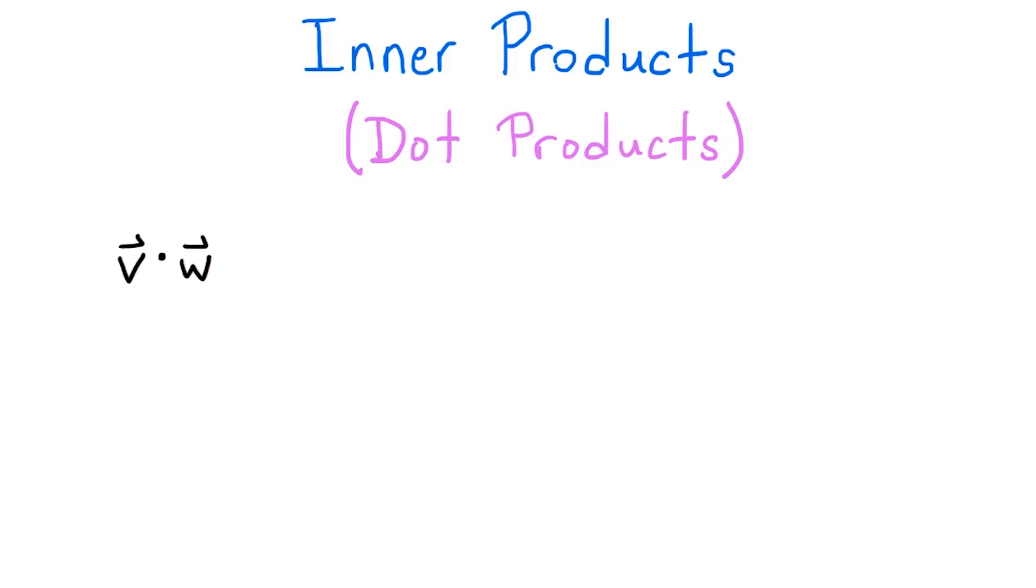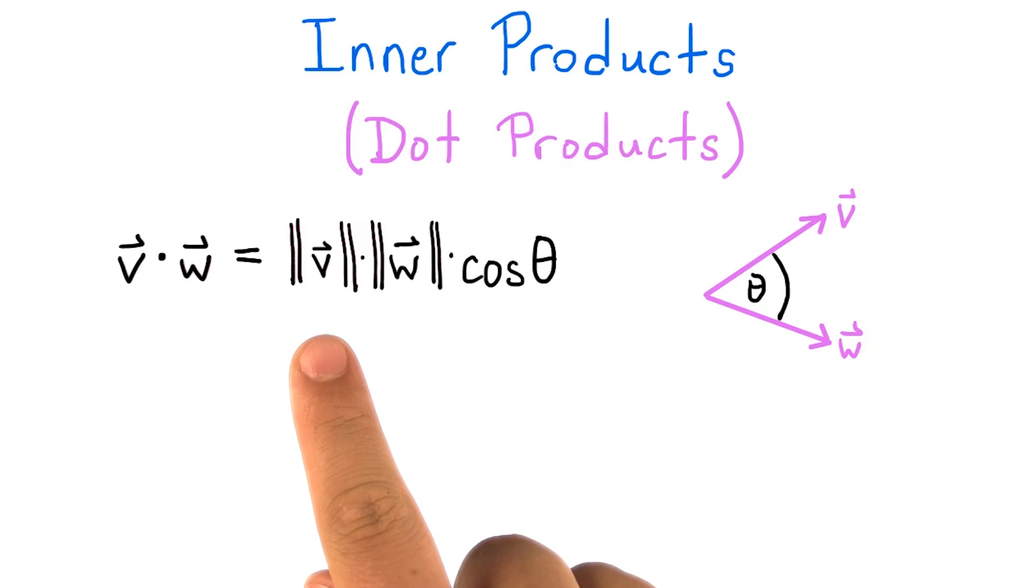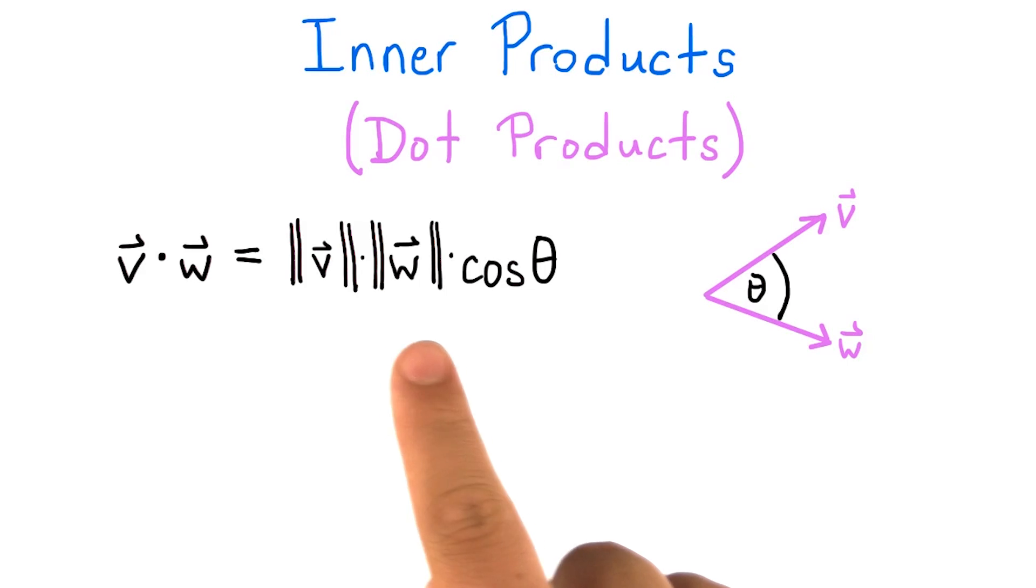Its importance stems from its geometric interpretation. It lets us find the angle between two different vectors. More precisely, the inner product of the vectors v and w in Euclidean space satisfies the following identity. v dot w equals the magnitude of v times the magnitude of w times the cosine of theta, where theta is the angle between the vectors v and w if we were to draw them emanating from the same point.